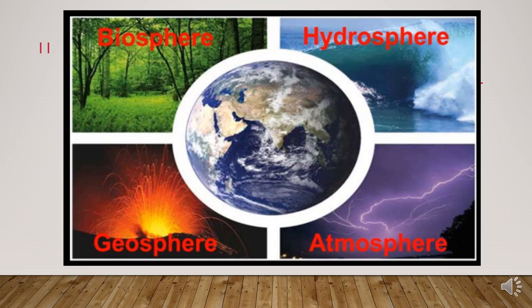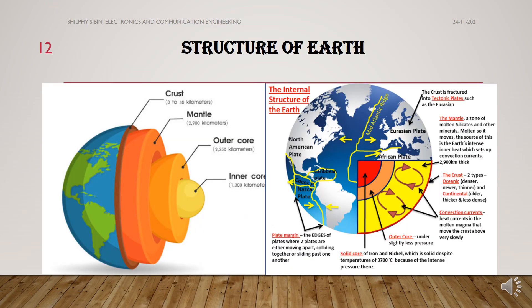Now we have the four subsystems: Biosphere, Hydrosphere, and Atmosphere, along with the Geosphere, making up the surface of the Earth. Coming to the structure of the Earth — we divide it into four concentric circles. The outer portion is the outermost concentric circle, and the top layer over the mantle is known as the crust.